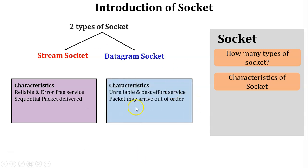Datagram socket characteristics are unreliable and best-effort service. Unreliable means lost or damaged datagrams are not re-sent by the sender. Best-effort service means all datagrams reach the destination within a small period of time. Another characteristic is that datagrams may arrive out of order, since datagram sockets cannot assign sequence numbers and all datagrams are put on the network link simultaneously.